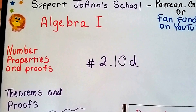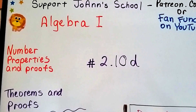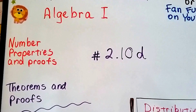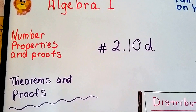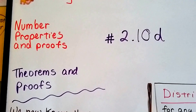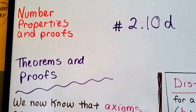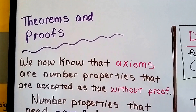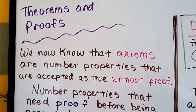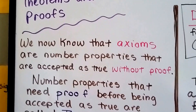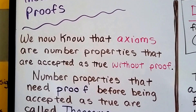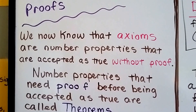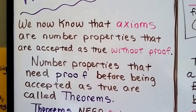Algebra 1, number 2.10d. We're still talking about number properties and proofs. We're going to talk about theorems and proofs in this video. This one's going to be a little bit longer than my normal videos because I'm packing a lot of information in here before we go on to chapter 3.